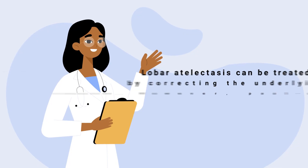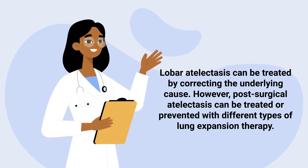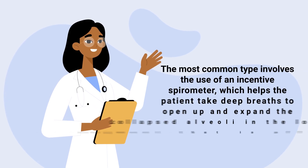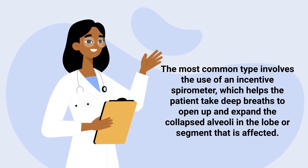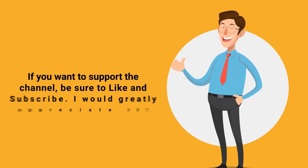Lobar atelectasis can be treated by correcting the underlying cause. However, post-surgical atelectasis can be treated or prevented with different types of lung expansion therapy. The most common type involves the use of an incentive spirometer, which helps the patient take deep breaths to open up and expand the collapsed alveoli in the affected lung or segment.